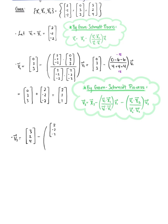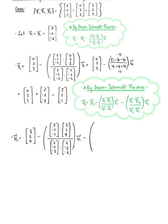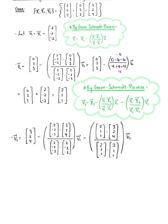This scalar multiple is all still multiplied by vector v₁, minus the projection of vector x₃ onto vector v₂. We have vector v₂, which is (2, 1, 1), dotted with vector x₃, (3, 2, 4), all divided by the dot product of vector v₂ with itself. This scalar multiple is multiplied by vector v₂.